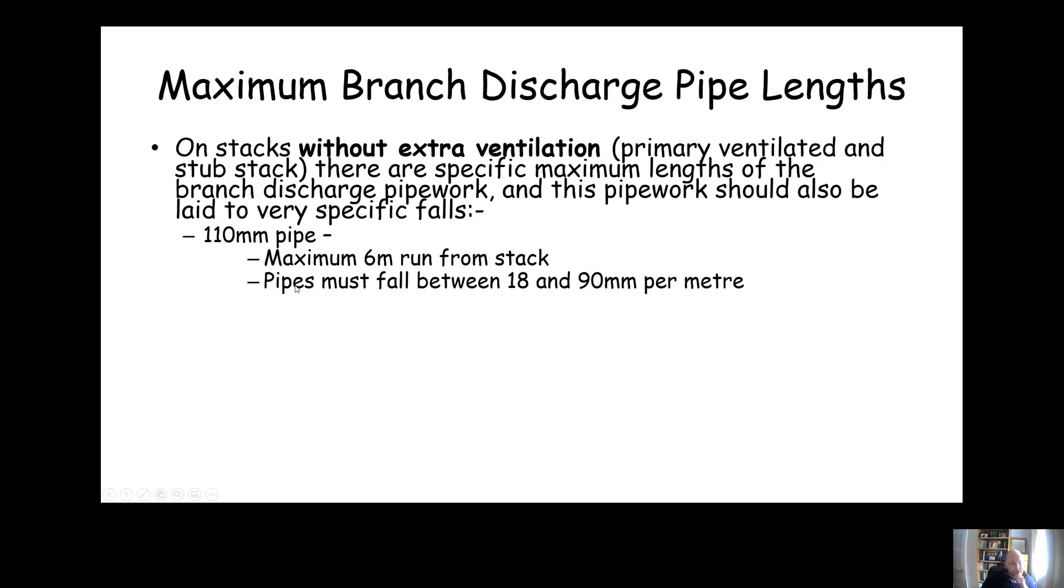The pipe should drop ideally at around 18 millimeters per meter, which is the minimum fall, but the maximum fall that you're allowed to have is 90 millimeters per meter. So that means for every meter it goes horizontally, it can drop between 18 millimeters vertically and 90 millimeters vertically.